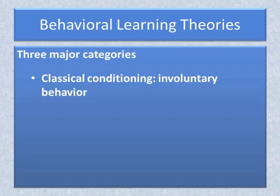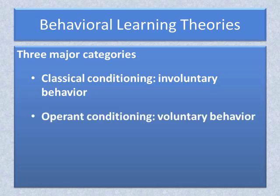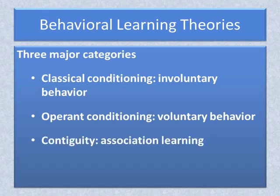There are three major categories of behavioral learning theories. The first is labeled classical conditioning, or respondent conditioning — this theory describes learning related to involuntary behaviors. The second is labeled operant conditioning, which describes learning related to voluntary behaviors. The third is contiguity theory, which describes the association of stimuli and responses when they occur together in the same time and/or geographical space.